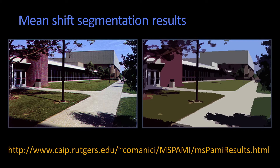Let's take a look at a result. This comes from a nice little database published based upon a PAMI paper. Cominici was one of the original developers of Mean Shift as applied to computer vision. Here's our original image, and then you apply Mean Shift and it does a really fine job. Take a look at this brick structure here — all of those pixels are put in the same region.